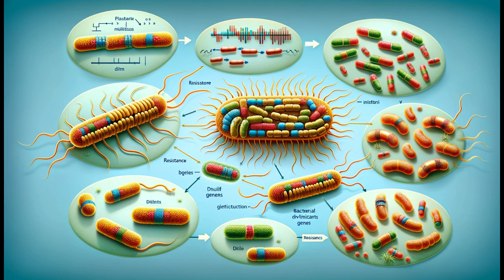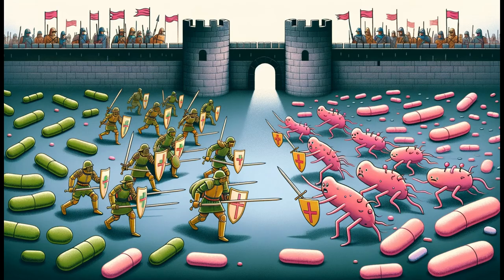Vertical gene transfer. Moreover, resistant bacteria pass these genes to their offspring, spreading resistance further. Selective pressure: antibiotics kill susceptible bacteria, but resistant ones survive. This survival of the fittest leads to the dominance of resistant strains.